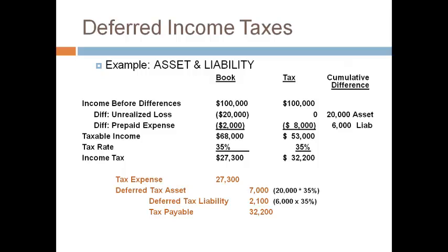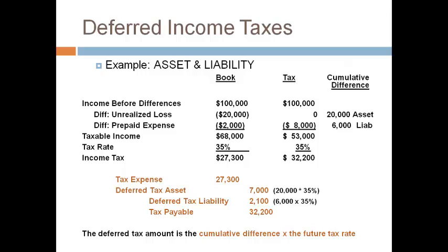The amount to tax expense is a plug when the future tax rate changes. This format is always used to determine the accounts and amounts to record for income taxes. There are two columns — one for books (the income statement) and one for tax (the tax return). It begins with income before differences for the same amount. Expenses and losses are always negative amounts, and revenues and gains are always positive amounts. The tax rate is the current year rate and is the same for both columns. The bottom of the tax column is always the tax payable amount, and the bottom of the book column is the tax expense amount if the future tax rate is not different — if it is, tax expense is a plug. The amounts for deferred tax accounts are always the cumulative difference multiplied by the future tax rate.